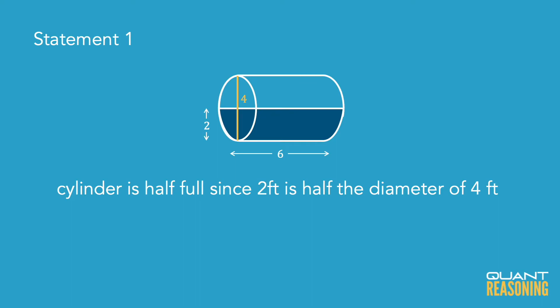So whatever the volume of the cylinder is, the gasoline is half of that. Now if we know the length of the cylinder and we know the diameter of the cylinder, can we find the volume of the cylinder? Yeah, sure. I don't actually need to know how to do that because it's data sufficiency. I just need to be confident that one could do that if one wanted to.